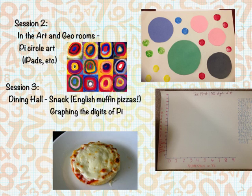We have a third session — remember, these aren't in order; every group will get a different session at a different time. We'll have snack in the dining hall: English muffin pizzas. Chef Kevin said he'd set up the muffin, sauce, and cheese for the 9th grade and 4th grade group to assemble. While the food is cooking, students can determine the frequency and create a bar graph showcasing which number in Pi shows up the most for the first 100 digits. They can make predictions and use sticky circles to plot their tallies.